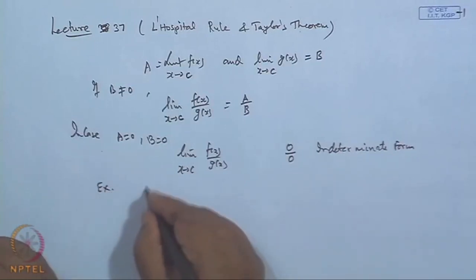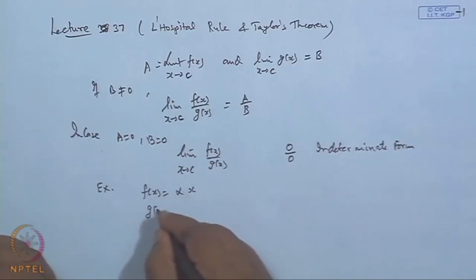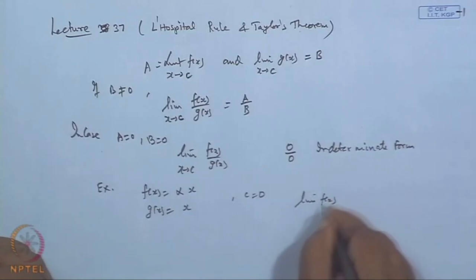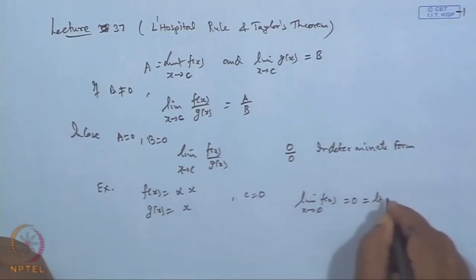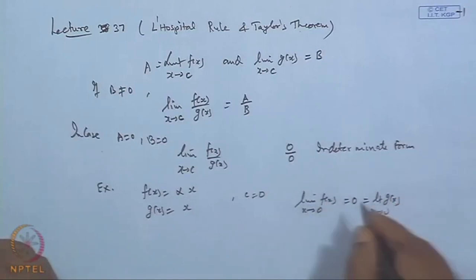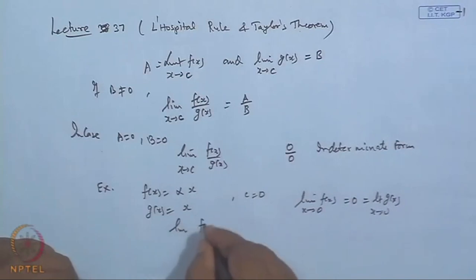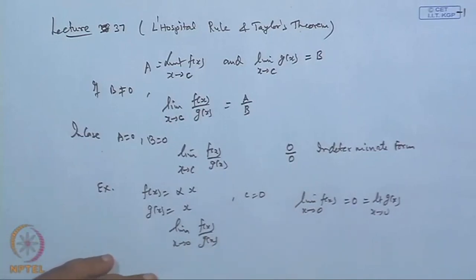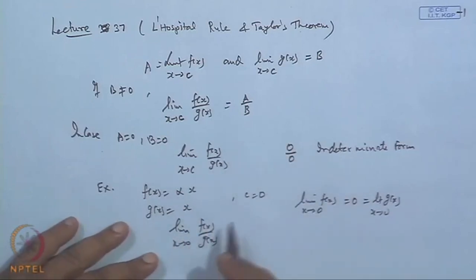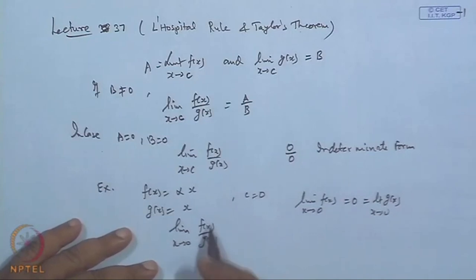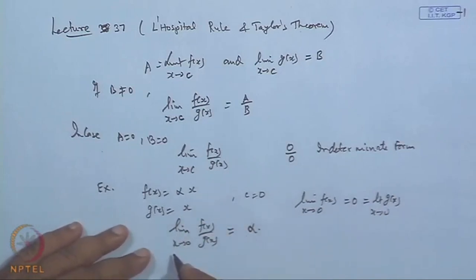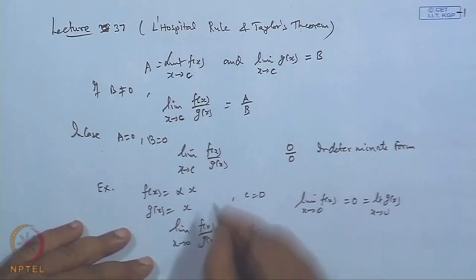For example, if we take f(x) = α·x and g(x) = x and choose c = 0, then clearly the limit of f(x) as x→0 is 0 and the limit of g(x) as x→0 is also 0. When you take the limit of f(x)/g(x) as x→0, it is 0/0 form. But if we substitute, the limit comes out to be α, because x cancels, so the limit is α, a real number.